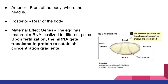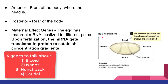In terms of maternal effect genes, when a female Drosophila produces eggs, it has already laid down mRNA that's localized to these poles. Upon fertilization with male sperm, that mRNA gets translated to protein to establish these concentration gradients, which will then define how that specific segment is going to develop.